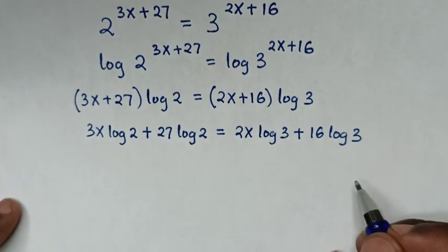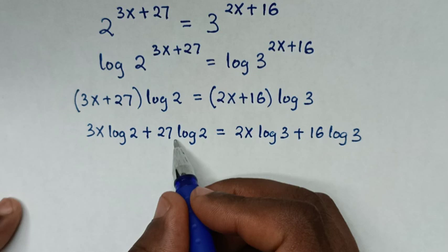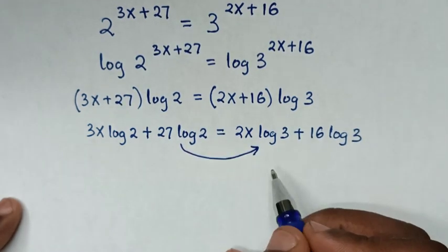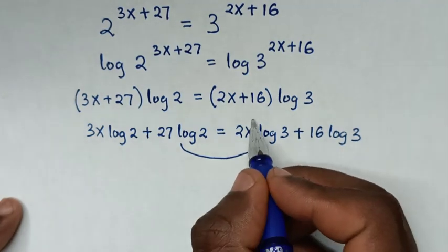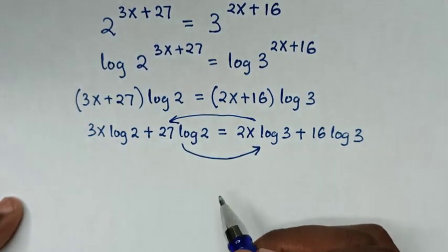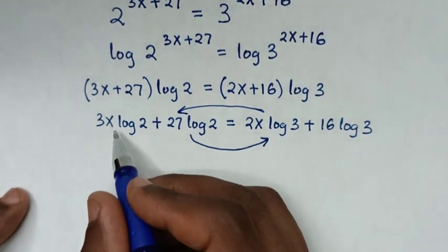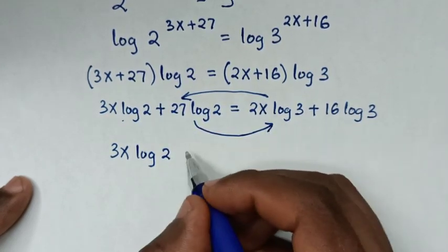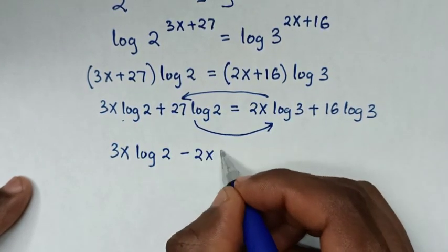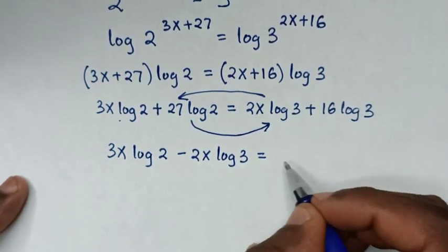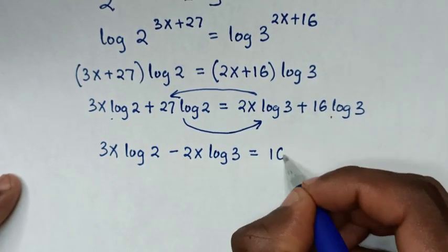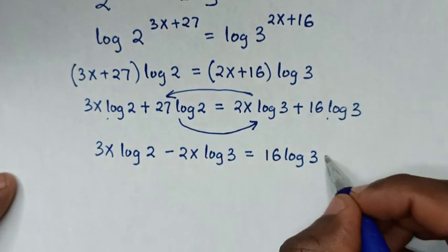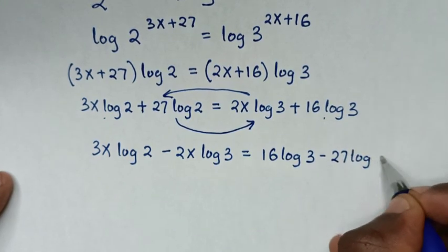Then in the next step, we take the like terms to one side. So 27 log of 2 moves to the right side, and 2x log of 3 moves to the left side. So our equation will be 3x log of 2 minus 2x log of 3 is equal to 16 log of 3 minus 27 log of 2.